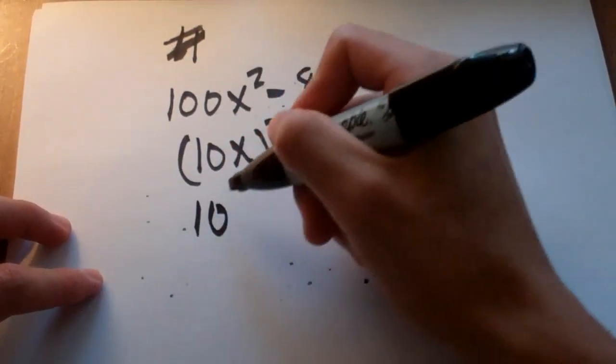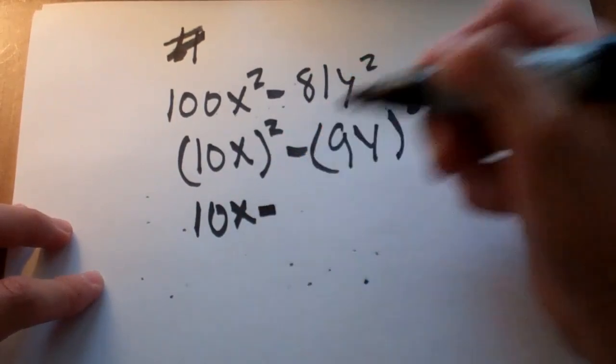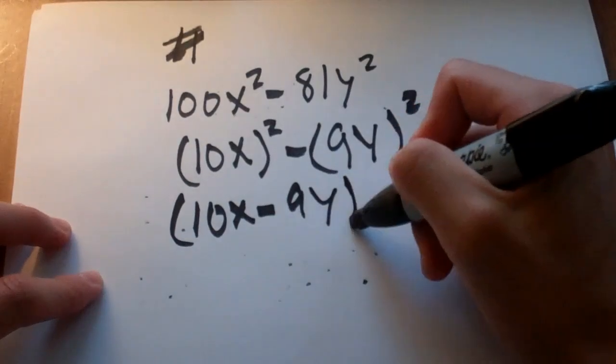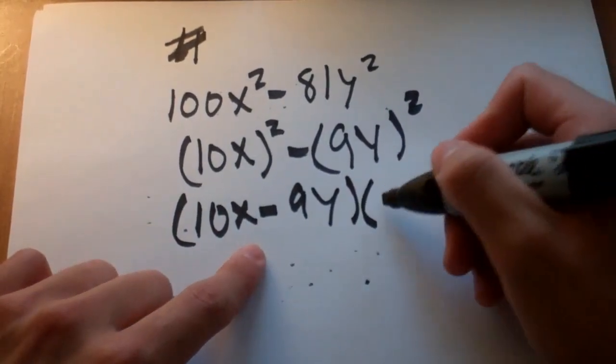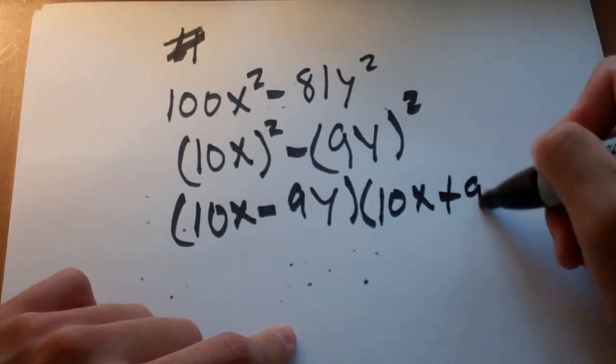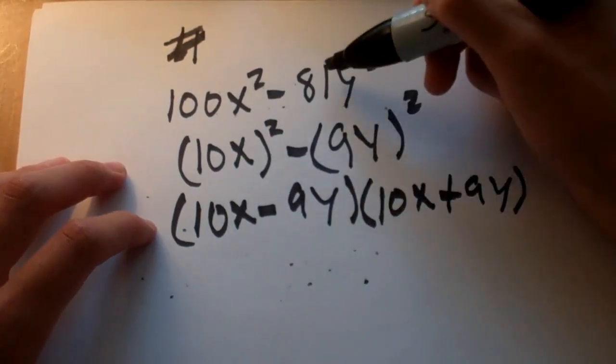So, now I can say, 10 x minus 9 y times 10 x plus 9 y. And if we were to multiply this together, we would get what we started with.